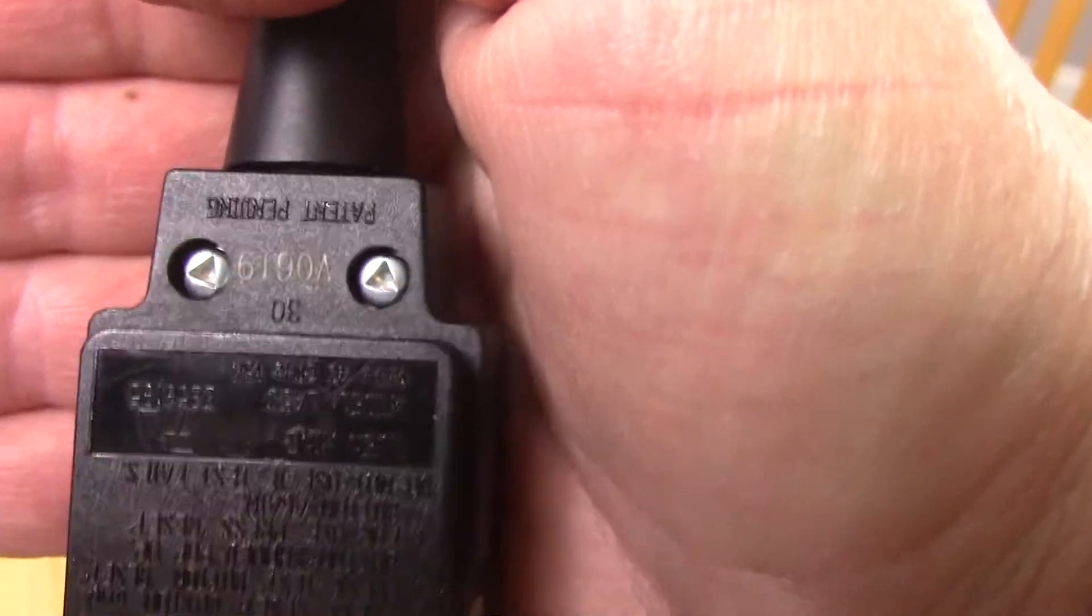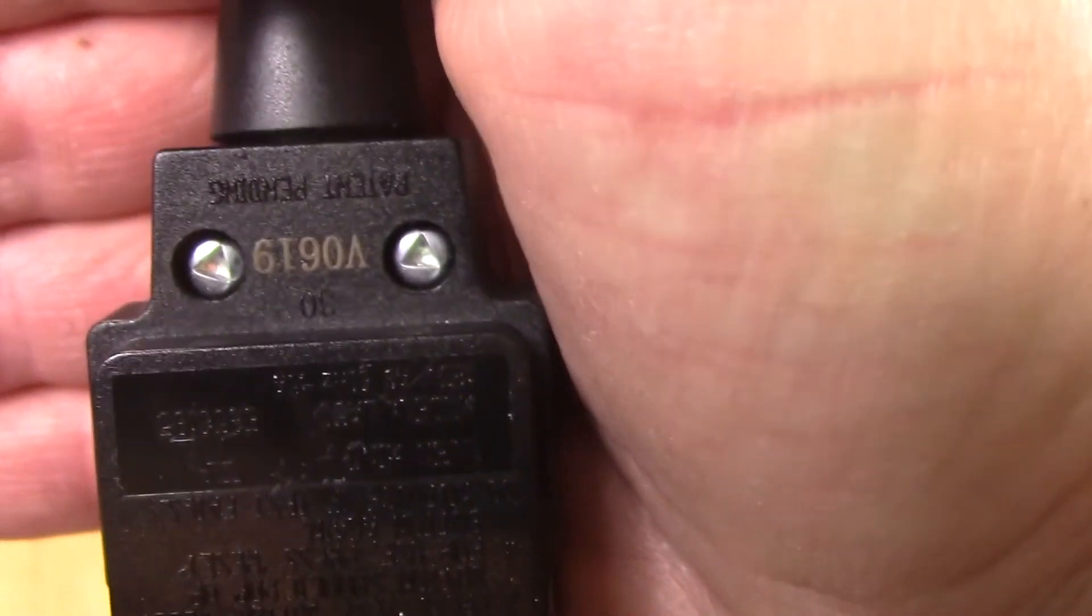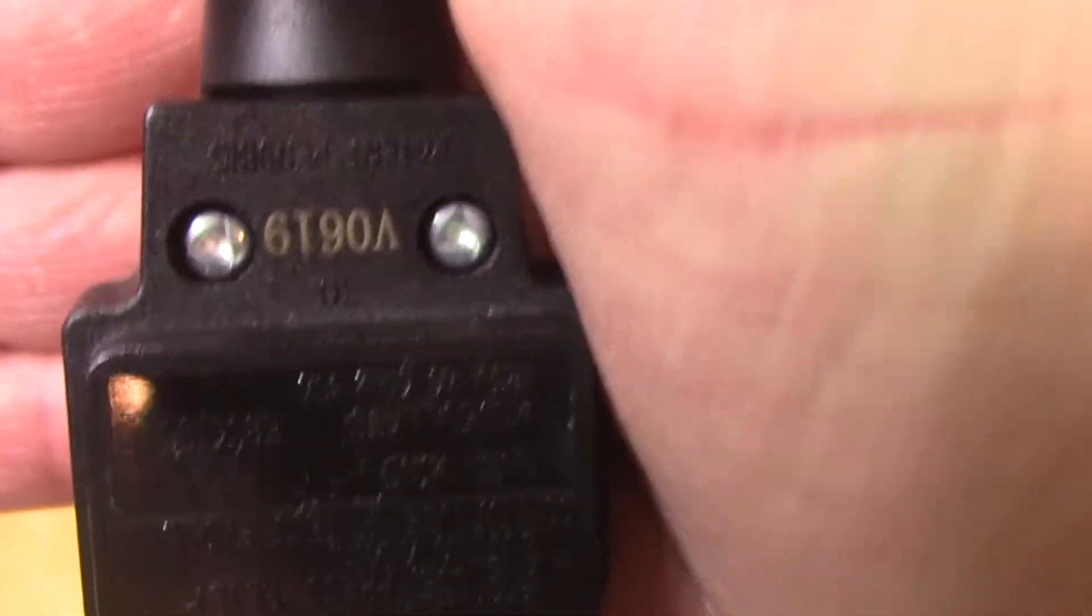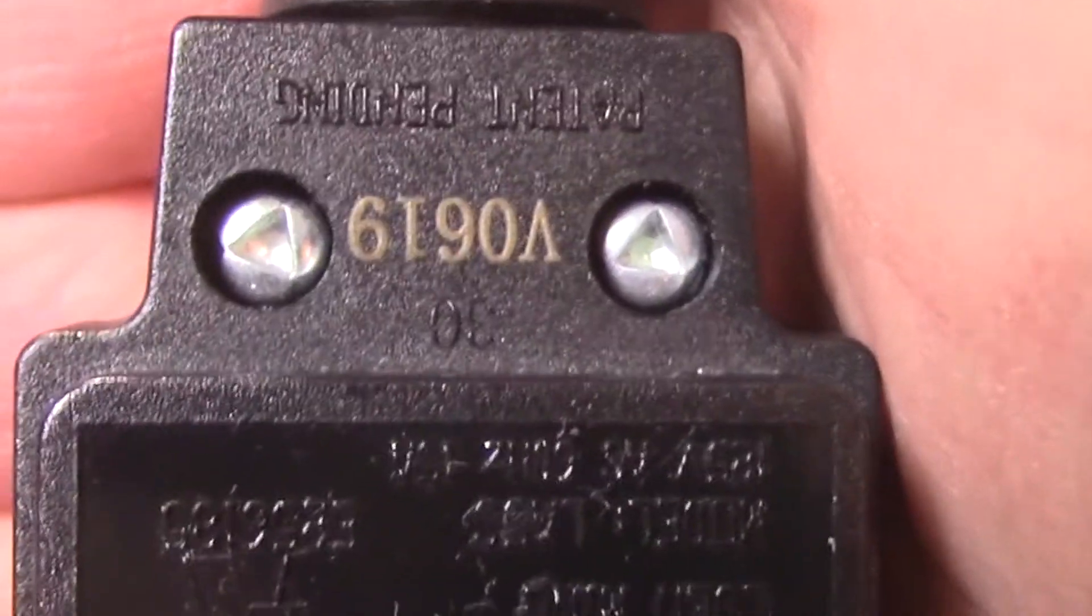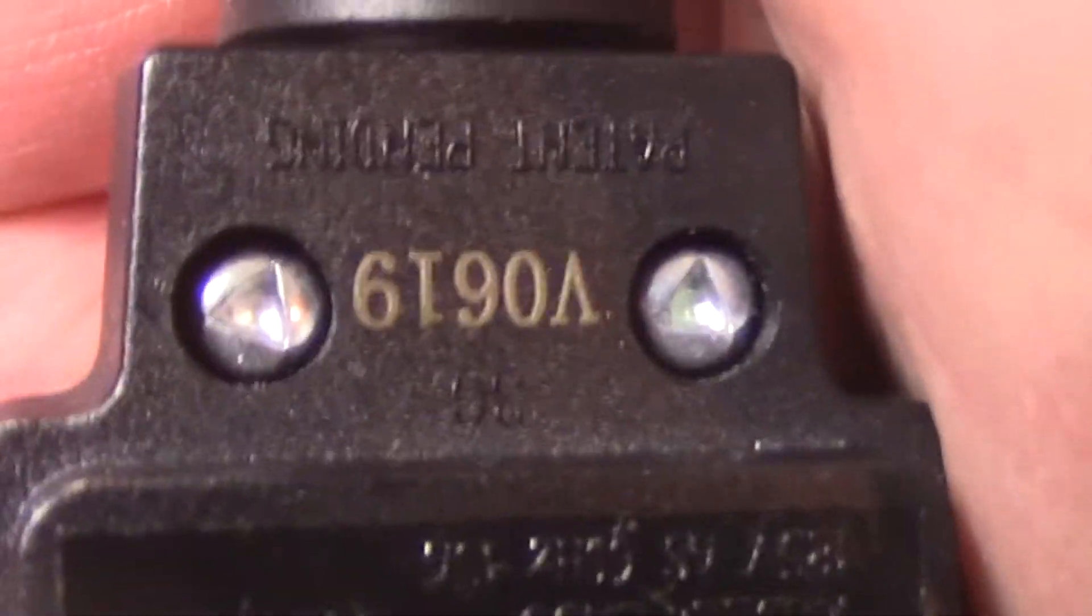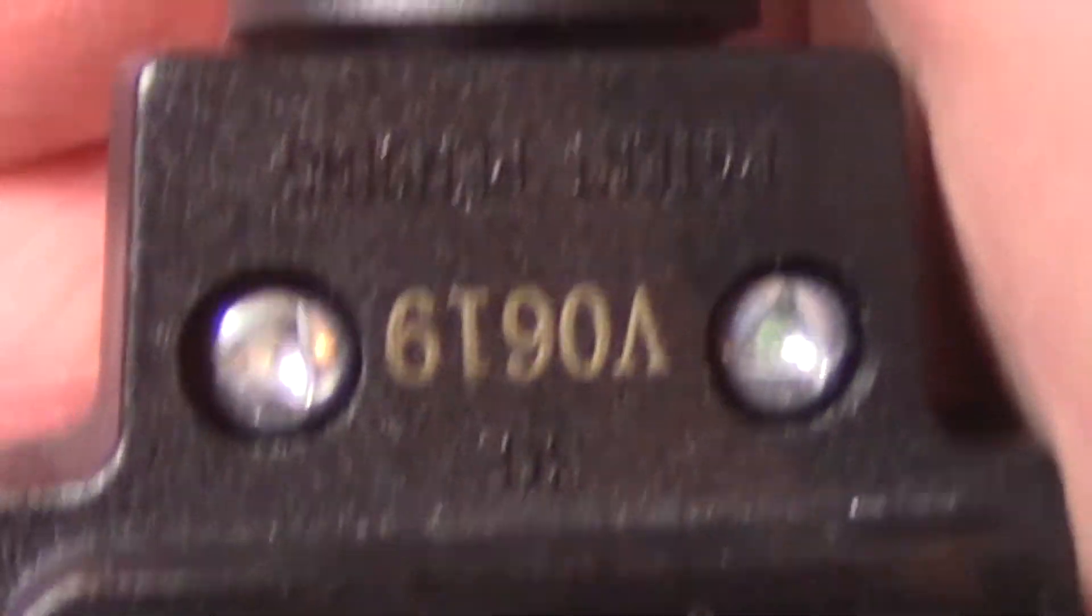One of the things you may run into when you have to take something apart is finding a funny looking screw like these. I don't know if you can really see it clearly or not, but they're little triangles. Obviously, a Phillips screwdriver is not going to take that out.